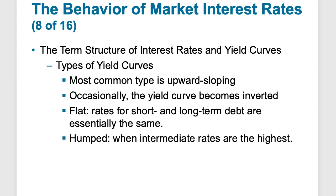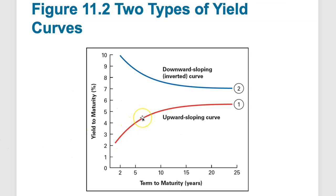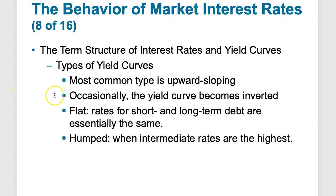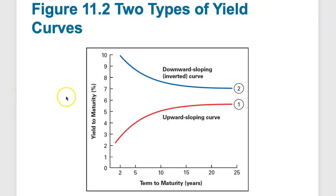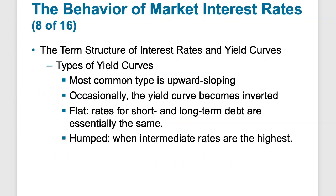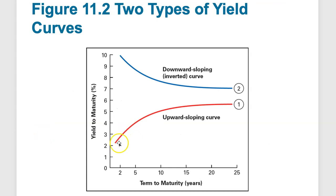The types of yield curves: the most common is the upward sloping yield curve — the most frequent stance in the marketplace. Occasionally it becomes inverted, or downward sloping. Sometimes it could be flat, where short-term and long-term rates are essentially the same. There can also be a humped yield curve, where intermediate rates are higher — the 10 to 15 year notes and bonds carry higher interest rates than either the longer-term or shorter-term treasuries.